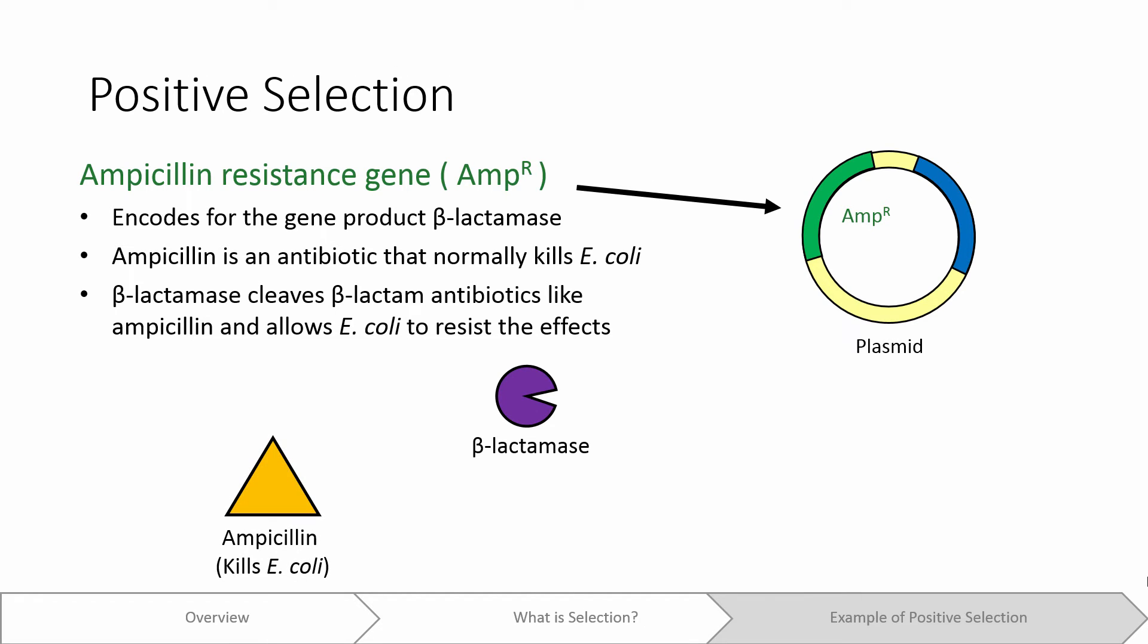Normally, ampicillin will kill E. coli, but if beta-lactamase is present, it will degrade the ampicillin, allowing the E. coli to survive.